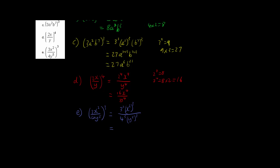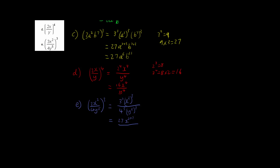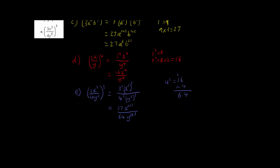Now we work out each part. 3 cubed we've already worked out — that's 27. So we have 27x to the power of 2 times 3, using the fourth index law, which is x to the power of 6. For the denominator, 4 cubed: 4 squared is 16, and 16 times 4 is 64. So we have 64y to the power of 5 times 3, which is y to the power of 15. The final answer is 27x to the power of 6 divided by 64y to the power of 15.